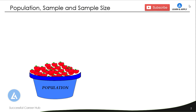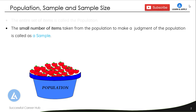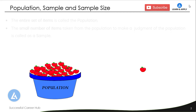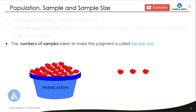The first definition is population, sample, and sample size. Population is nothing but the entire set of items. If we take a small number of items from this population to make a judgment about the population, it is called a sample. For example, if we take one, two, and three apples from an entire population, the number of samples taken is called the sample size — in this case, a sample of size 3.